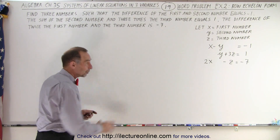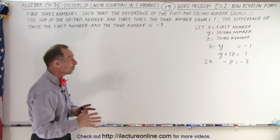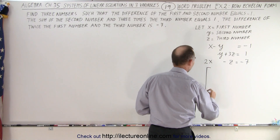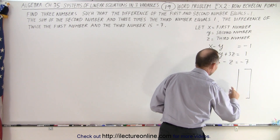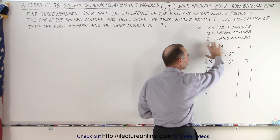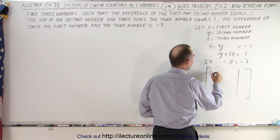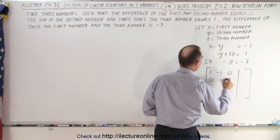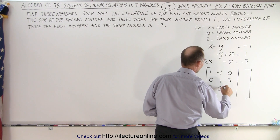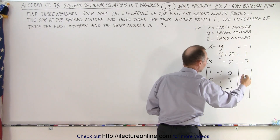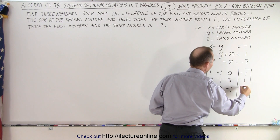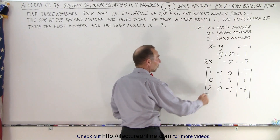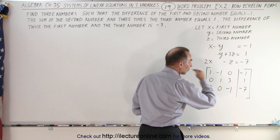I've already got the three equations on the board — the very same three equations we solved in the previous video — but now we're going to put them into a matrix format called the augmented matrix. We're going to put all the coefficients of x, y, and z: one, negative one, and zero; zero, one, and three; two, zero, and negative one. On the right side we put the three constants: negative one, one, and negative seven.